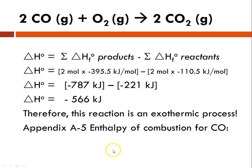And again, looking up in appendix A-5 for the enthalpy of combustion for carbon monoxide, it is negative 566.0. So again, negative 283 kilojoules per mole times two—in this equation we have two—we get the same number. So it works.